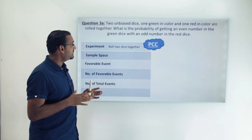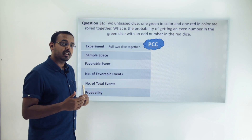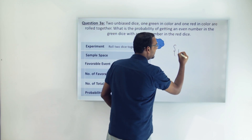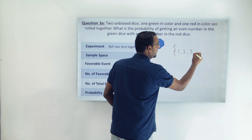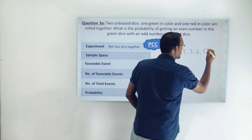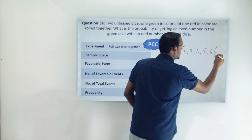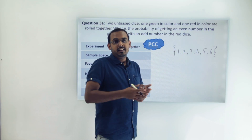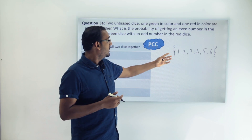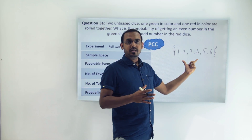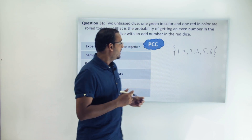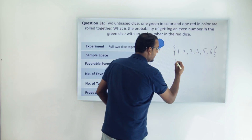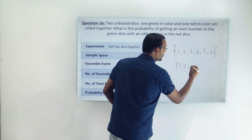The sample space here is a little more complex as opposed to rolling one die. When we roll one die we know that the sample space will be any of the numbers 1, 2, 3, 4, 5, or 6. So this forms the sample space of rolling a die once.